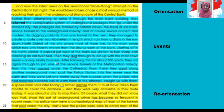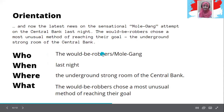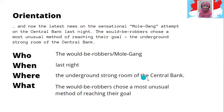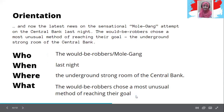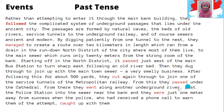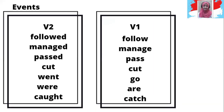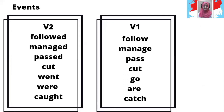Ok, nanti silahkan sebutkan orientation, events, and reorientation — ada apa saja di orientation, kemudian events dan reorientation. Sekalian bagi tugasnya masing-masing menjelaskan bagian yang mana. Jadi nanti kalian bisa buat seperti ini juga — orientation: who, when, where, what. Who: the would-be robbers or mall gang. When: last night. Where: the underground strong room of the central bank. What: the would-be robbers chose a most unusual method of reaching their goal. Past tense — tunjukkan seperti ini: followed, managed, passed, cut, went, were.